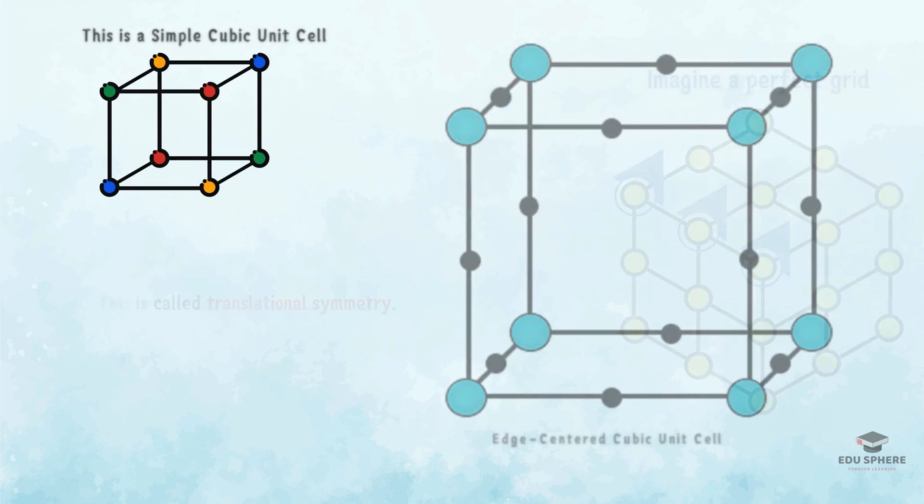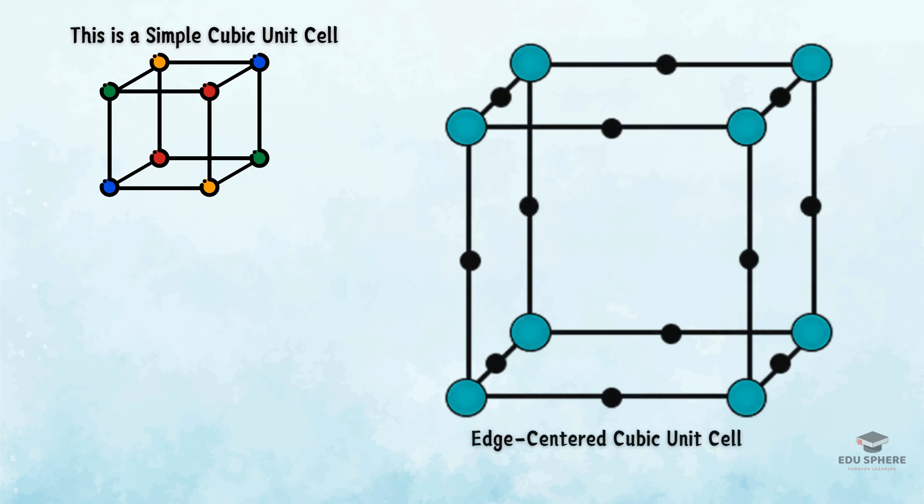Now, let's examine the edge-centered cubic unit cell. It's a cubic structure with additional lattice points at the center of each edge. While this might seem like a regular arrangement at first glance, it's actually not.